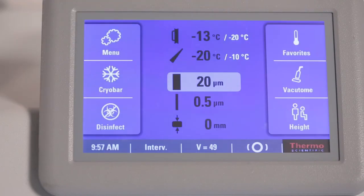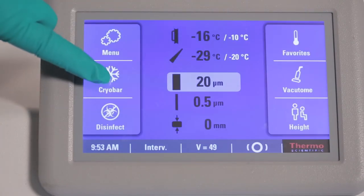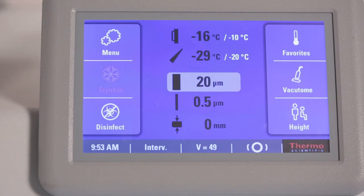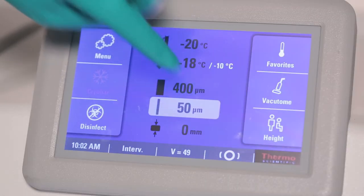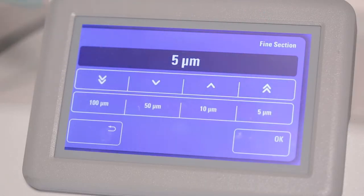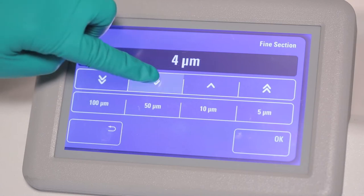Also featured on the touch screen is a cryo bar activation button that, when touched, drops the temperature down to minus 60 degrees Celsius. The NX70 cryostat offers a wide sectioning range for optimal operation.